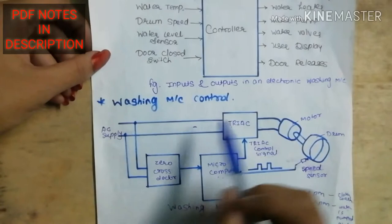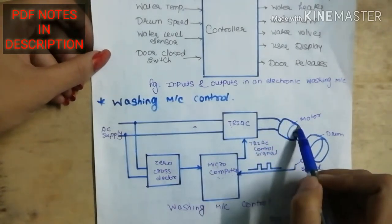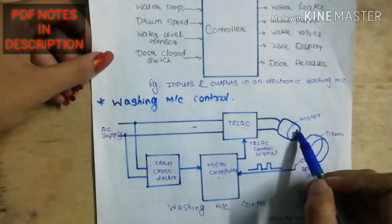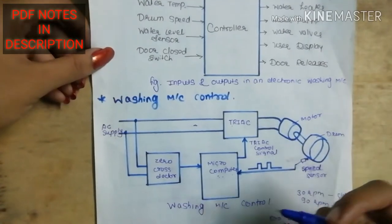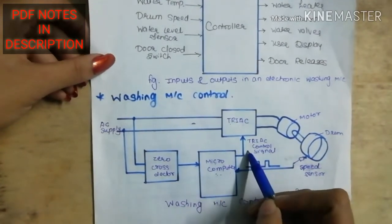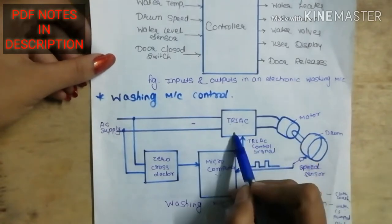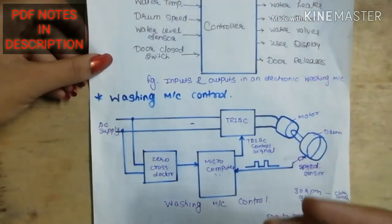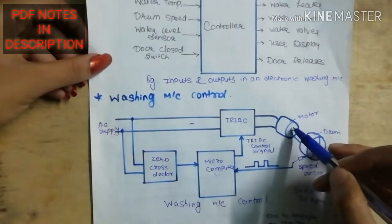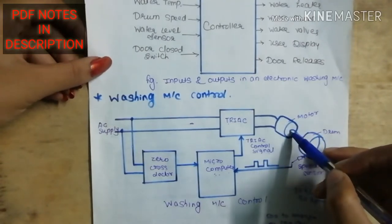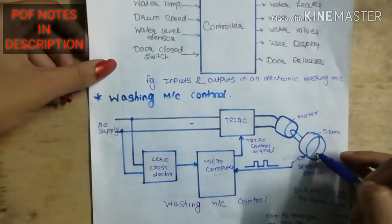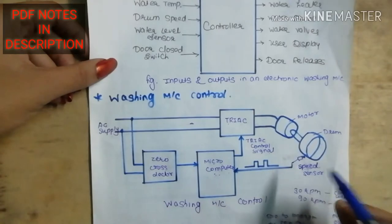First, we will see what happens. We need to pass the motor to rotate the motor, and as it rotates, the drum is attached with it, so the drum will also rotate. The speed of the drum is known as the speed sensor, and the drum is rotating at different speeds.